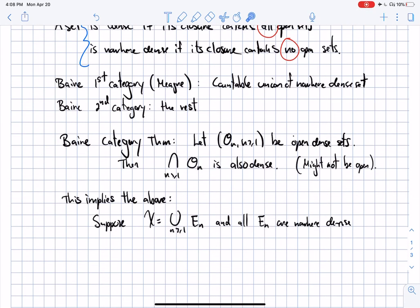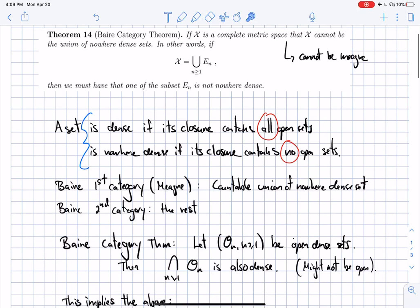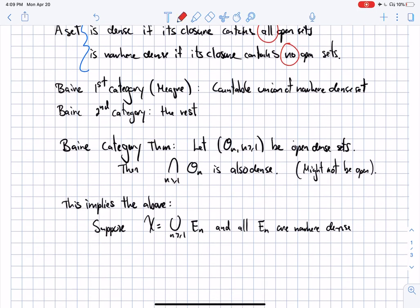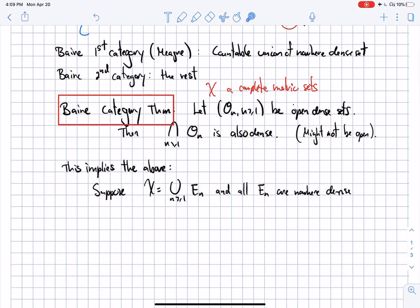Now, I wrote it this way in the notes because this is how we're going to use it, but a better statement, at least to remember it, is to say that if you're in a complete metric space X, and you take a bunch of open sets On that are dense, then the intersection is also dense. The intersection might not be open, obviously, but the intersection is dense. That's a nice way to remember it, and it's a nice topological fact.